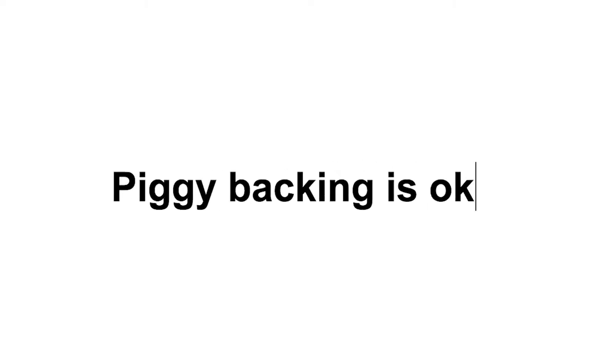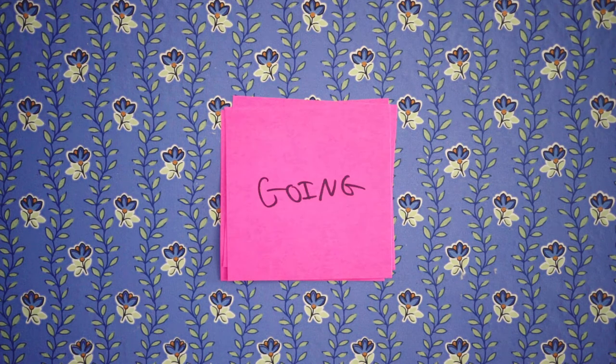So what does NAPS 100 Plus mean? N stands for no judgment — good or bad judgment of other people or yourself. A means all ideas are valuable. P is for piggybacking — it's okay to build an idea off someone else's. S is for silly and crazy ideas, so throw a wild idea out there. And 100 Plus stands for quantity, so give as many ideas as possible.